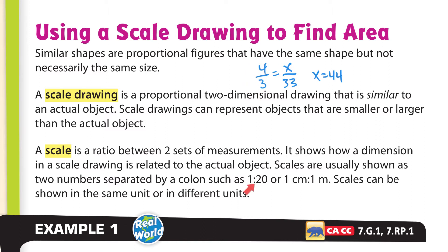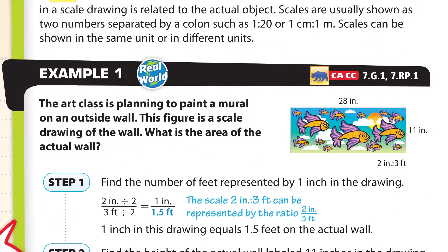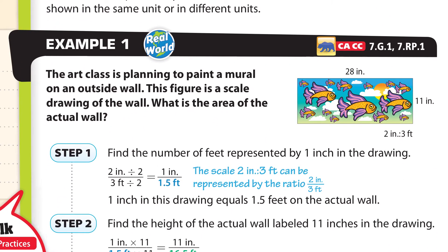Here are a couple of other ideas about scale notation. They use a colon for a scale, like one centimeter is to one meter, written with a colon. So one centimeter in the drawing represents one meter in real life — that would be the scale. Here's an example: the art class is planning to paint a mural on an outside wall. This figure is a scale drawing of the wall.